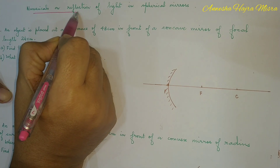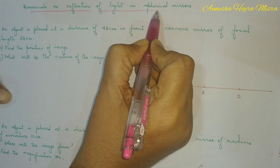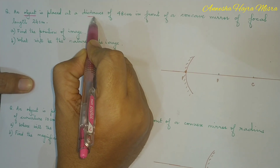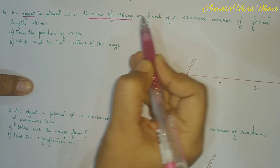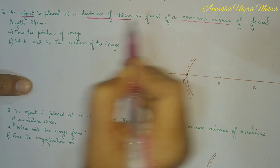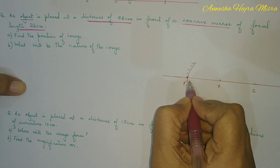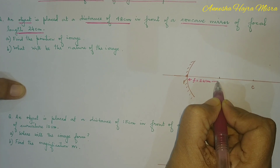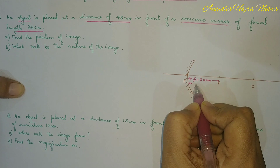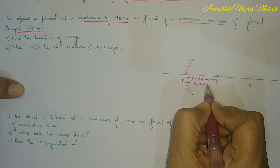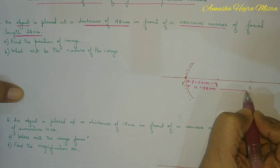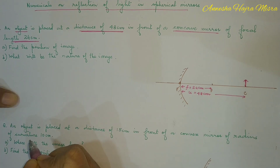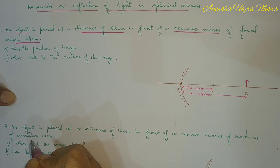Numerical on reflection of light in spherical mirrors. An object is placed at a distance of 48 centimeters in front of a concave mirror with a focal length of 24 centimeters. Since the object distance is 48 cm and focal length is 24 cm, the object is at the center of curvature, so the image will also be at the center of curvature.